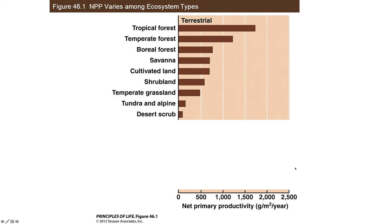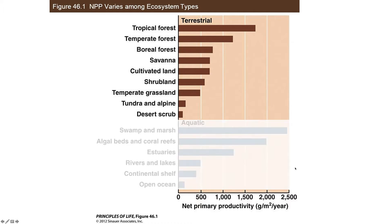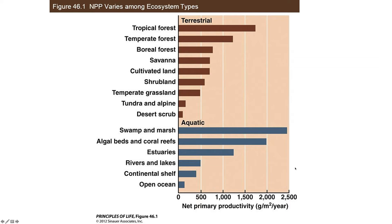Looking at net primary productivity across different biomes, terrestrial biomes show that tropical forests and rainforests tend to have the highest biodiversity because they have the highest productivity, going down until we reach the desert at the lowest level. In aquatic biomes, marshes, swamps, and estuaries have way more productivity because of greater nutrient availability and sunlight. Coral reefs are also very productive. The open ocean, as mentioned when discussing aquatic biomes, is more or less a desert — very little productivity, therefore very little biodiversity.